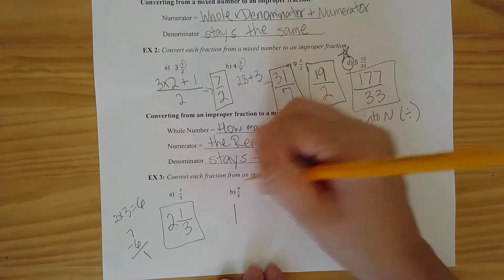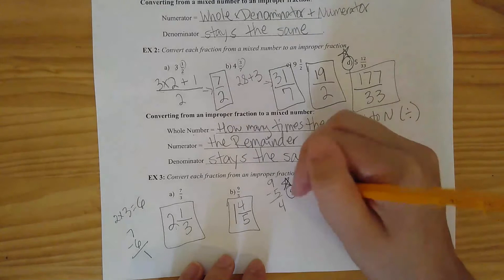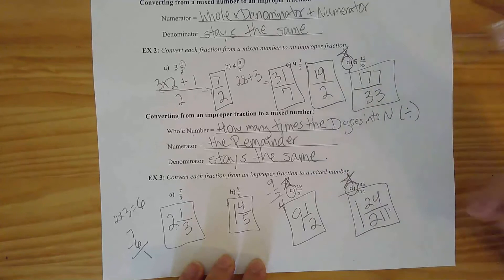In part c you have 19 over two, and in part d you have 235 over 211. See if you can turn those from improper fractions to mixed numbers. For part c you should get nine and a half. For part d you should get one and 24 over 211.